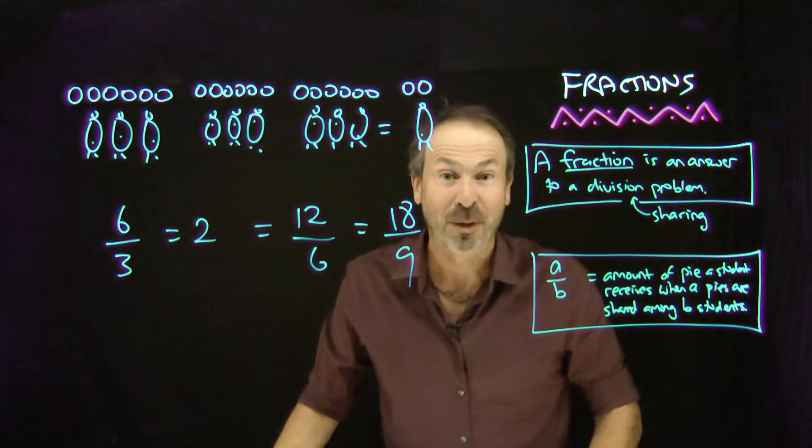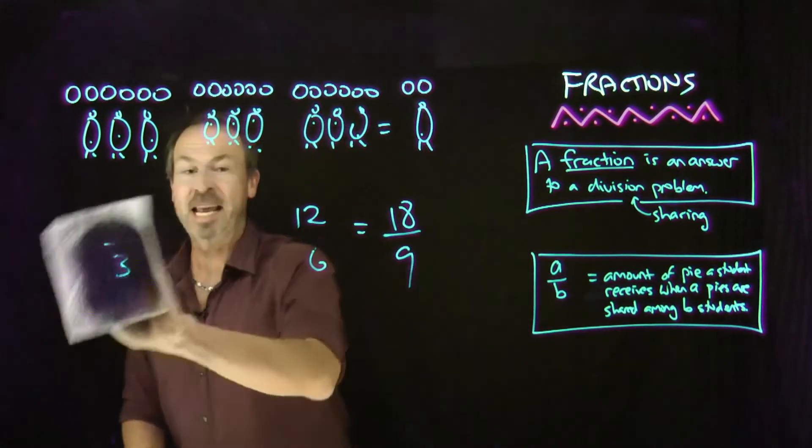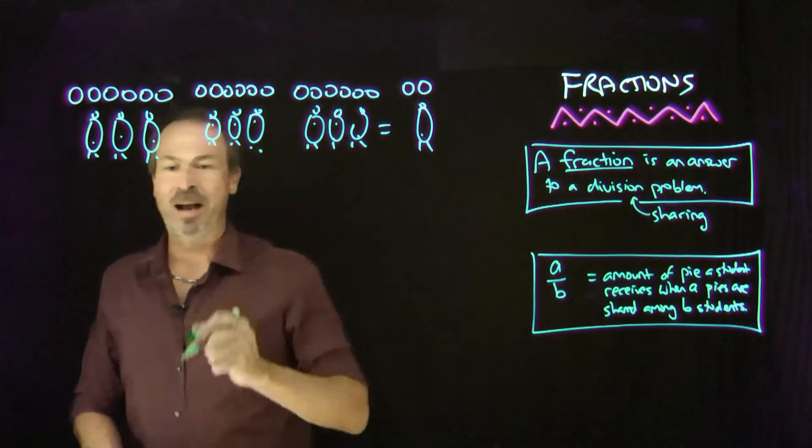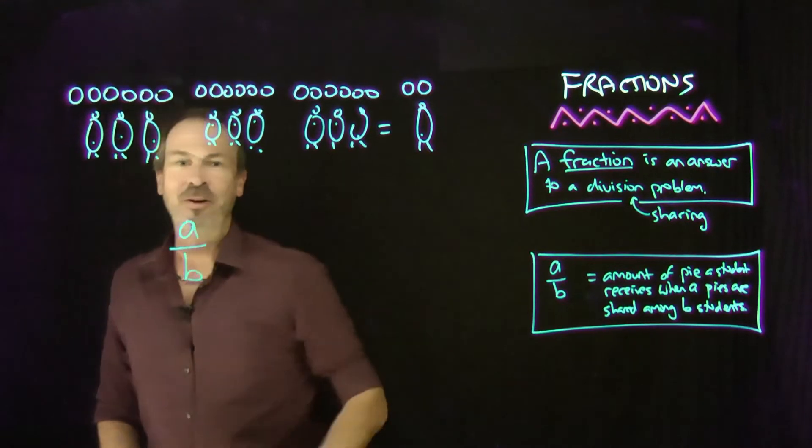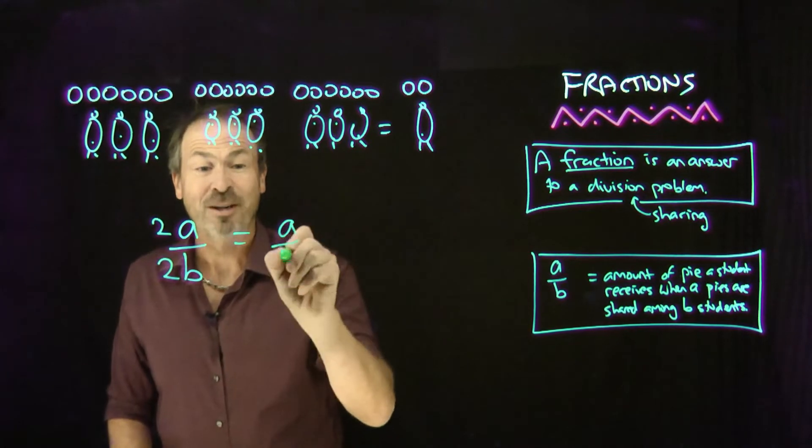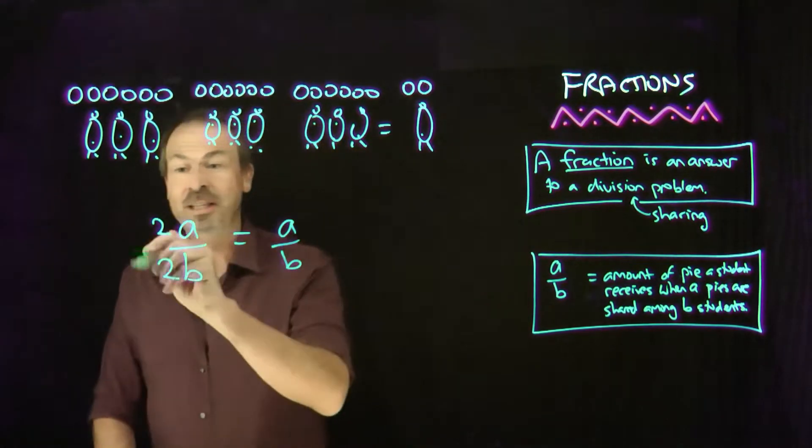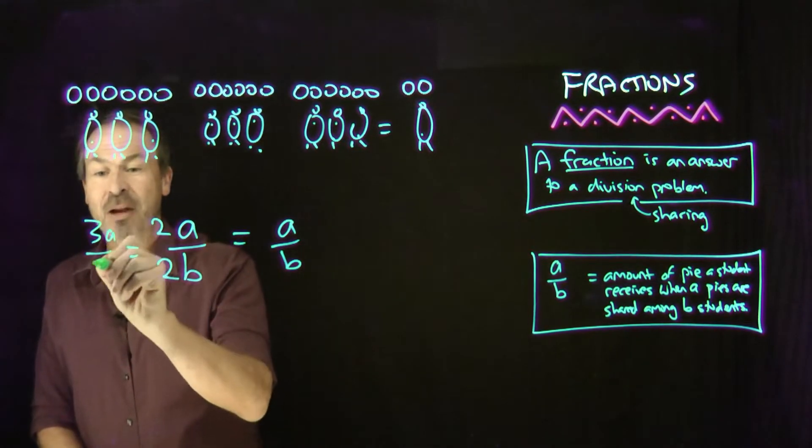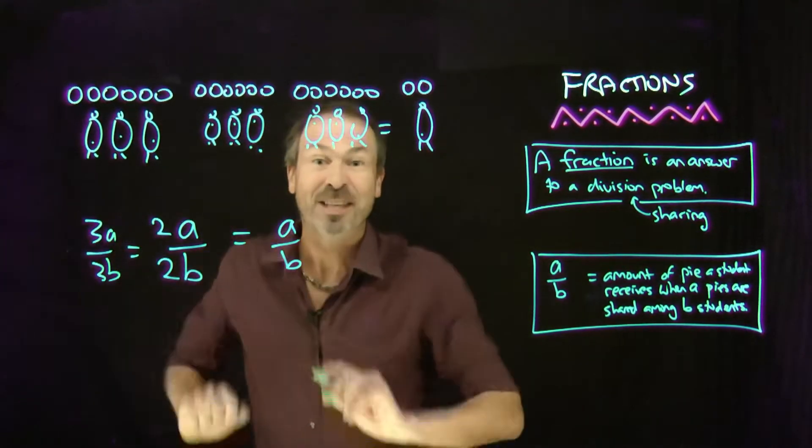So that is my fourth fundamental belief about fractions. That if I take a general fraction, a pies for b students, if I decide to double the number of pies and double the number of students, nothing changes. The same result I had before. Or if I chose instead to triple the number of pies and triple the number of students, nothing changes. It'll be the same result I had before.